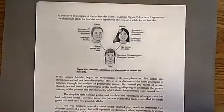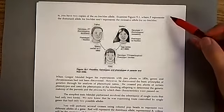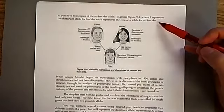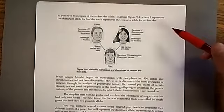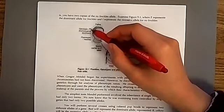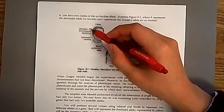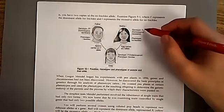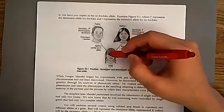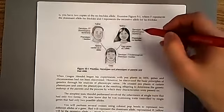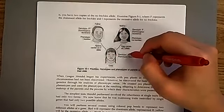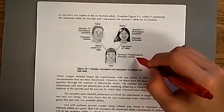Capital F represents the dominant allele for freckles and lowercase f represents the recessive allele for no freckles. The dominant allele is always marked with capital and recessive with lowercase of the same letter. In this example, the father's genotype is capital F capital F — homozygous dominant with freckles — and the mother is lowercase f lowercase f — homozygous recessive with no freckles. His sperm can only carry capital F and her egg can only carry lowercase f, so the child will always be capital F lowercase f — heterozygous — but because capital F is dominant, the child will show the phenotype of having freckles.